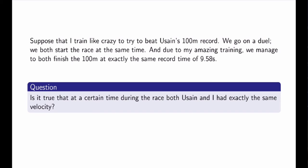Let me end this video with an interesting question. Suppose I train like crazy and try to beat Usain Bolt's 100m record. We both run a 100m race at the same time, and — amazingly — we both finish at exactly the same record time of 9.58 seconds. Here's the question: is it true that at some point during the race, both Usain and I must have had exactly the same velocity? That's not obvious, because of course we didn't run the whole race at the same velocity. Think about it.